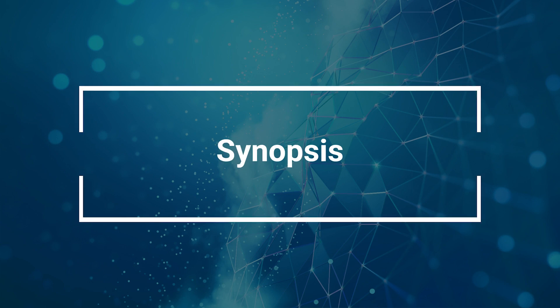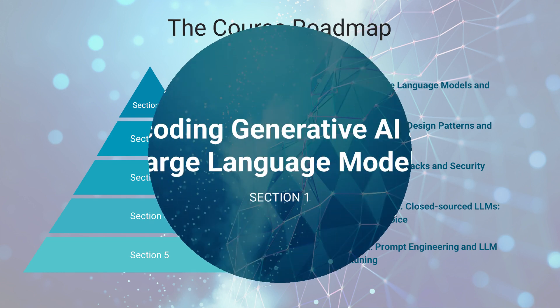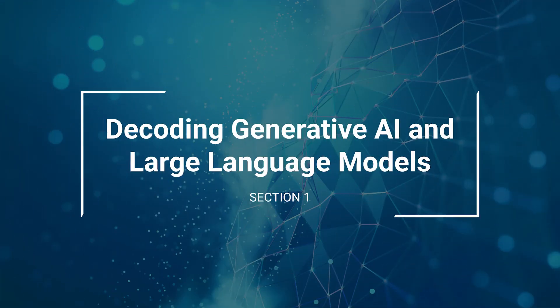A little bit about this course. We have five sections for this video course. The first section is decoding the large language model and generative AI. Second is about LLM architecture. Third section is about LLM technology steps. Fourth section is open source versus closed source large language models. We will help you make the choice in the video. And finally we have the hands-on demo. So a little bit of a dive into each section.